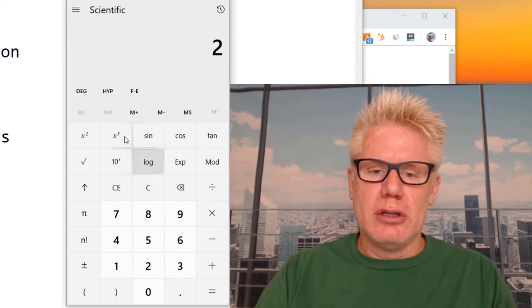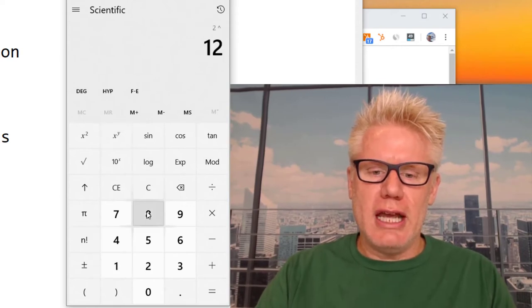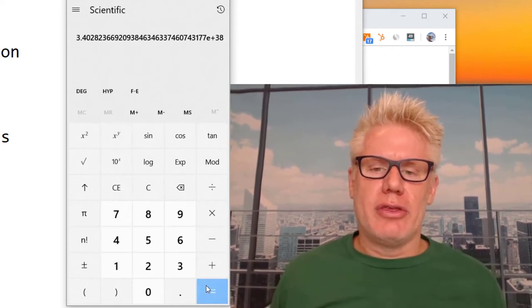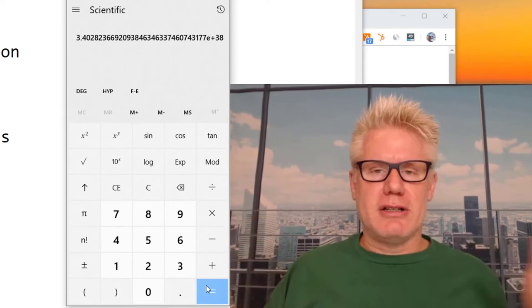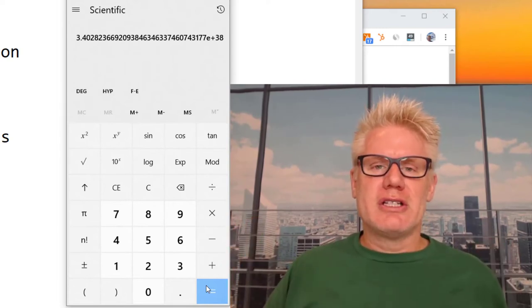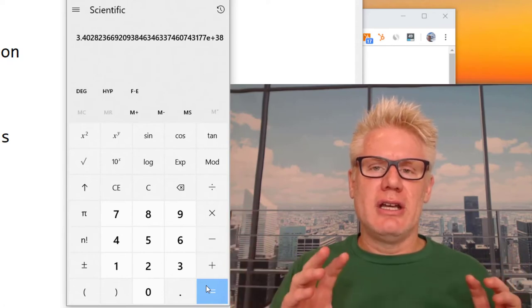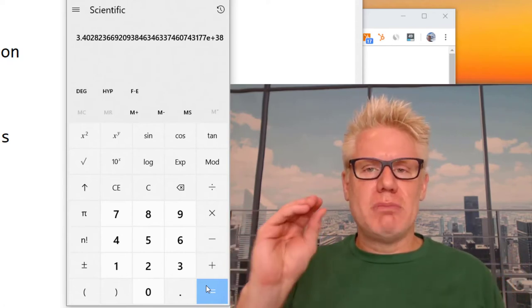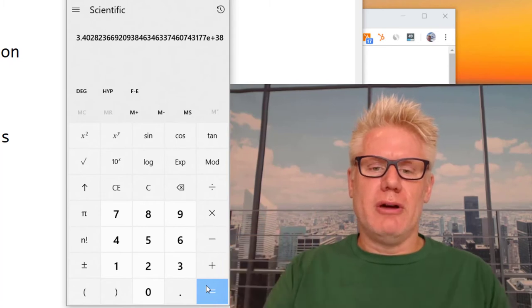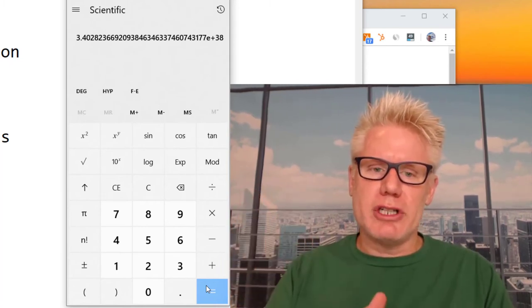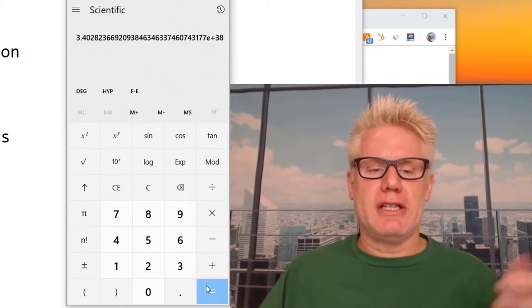So 2 to the 128 equals 3.4, whatever. That's basically, that's a really large number. So the probability of creating a collision is very small. It is possible, though. This probability is going to be smaller with SHA-512. There's more bits.